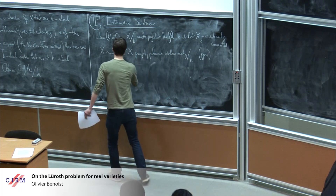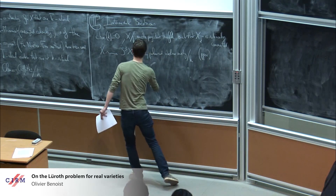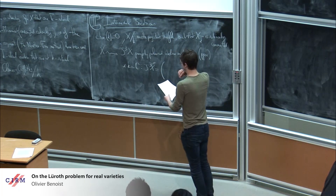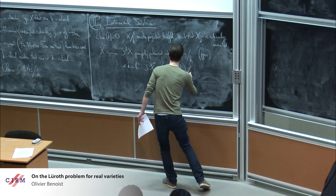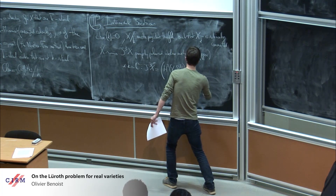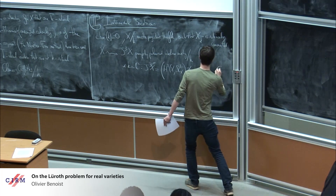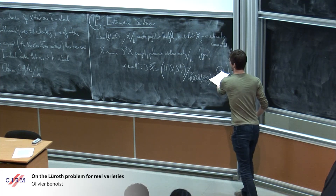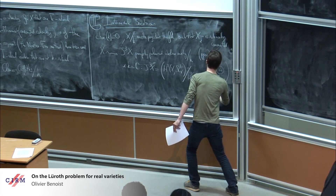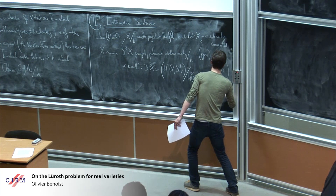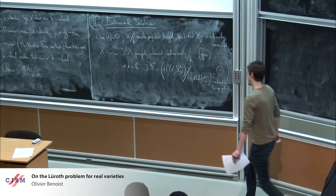Over the complex numbers there is a transcendental construction coming from Hodge theory. As a complex torus, this is the quotient of the vector space H²(X, Ω¹X) by the lattice given by the third Betti cohomology group. It is polarized by a principal polarization theta coming from the cup product. An algebraic construction that works over any algebraically closed field was found by Murre, using deep results of Bloch.